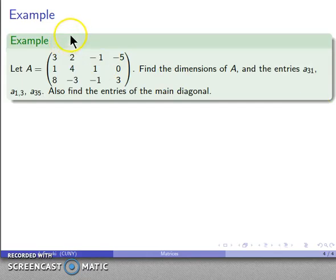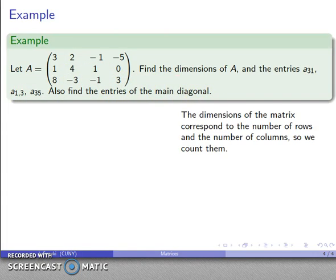So for example, let's take a matrix that looks like this and we want to describe the dimensions and find a couple of entries including the main diagonal. So the dimensions correspond to the number of rows and the number of columns, so we count them.